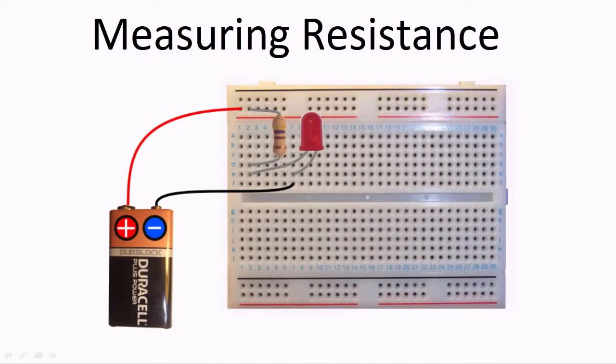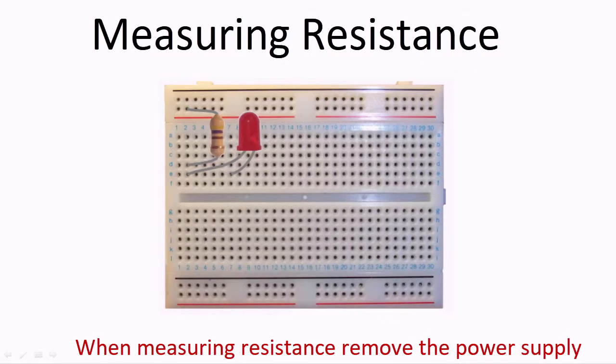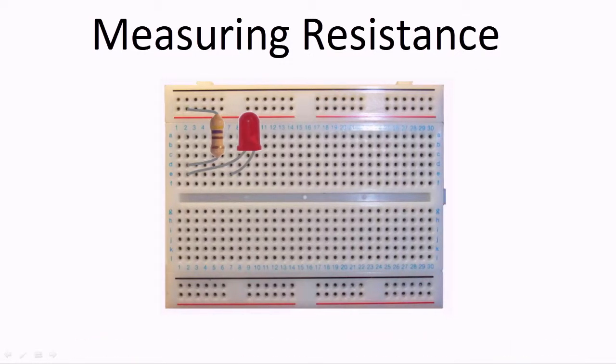So if we consider this simple circuit that contains a resistor and an LED, we can use a multimeter to check the value of the resistor. When measuring resistance in a circuit, the first thing to do is to remove the power supply. The multimeter itself will provide the necessary voltage in order to measure the resistance.